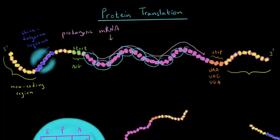We actually have 10 codons here. So because we have 10 codons, this polypeptide chain will have 10 amino acids (AA). Just to give you a little bit of perspective, this is a very small polypeptide chain. Most of the polypeptide chains in our body have between 200 and 300 amino acids.